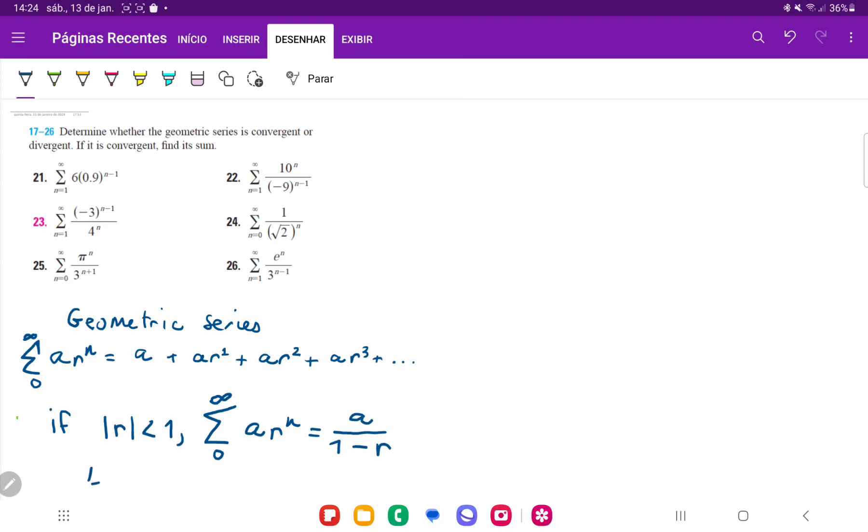Because if we take, say, 1 half, we raise it to 1,000 or something, that's going to be very small. Whereas if we have 1.01 and we raise it to 1,000, that's going to grow bigger.